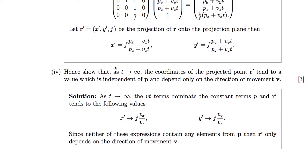The fourth part: hence show that as t tends to infinity, the coordinates of the projected point r-dash tend to a value which is independent of p. As t gets very large, the velocity terms dominate the p terms, and dividing top and bottom by t means the p terms disappear. This tends to f·Vx/Vz for the x coordinate and f·Vy/Vz for the y coordinate — neither expression involves position p, so they depend only on the direction of movement V.